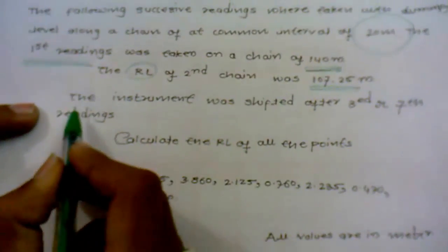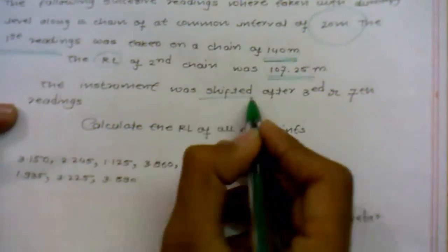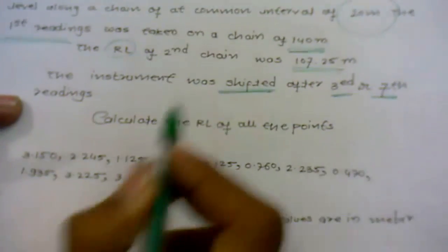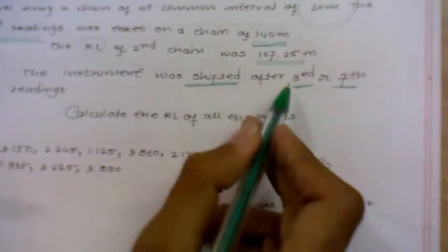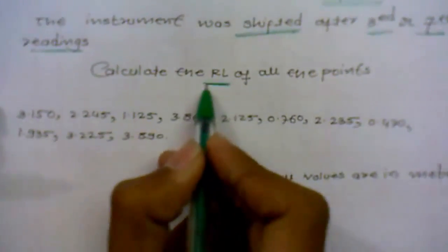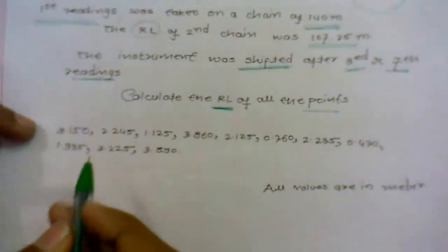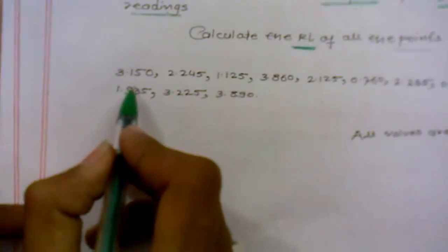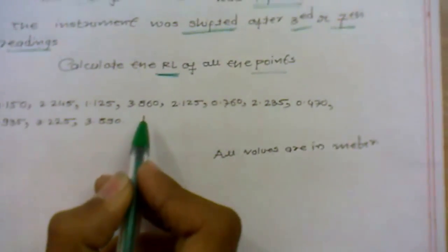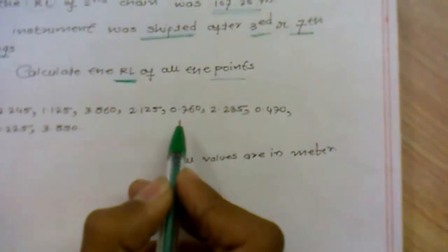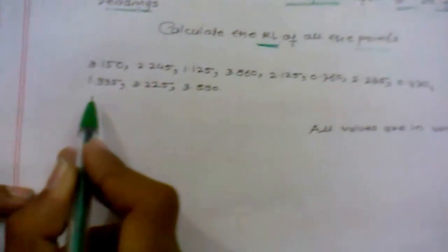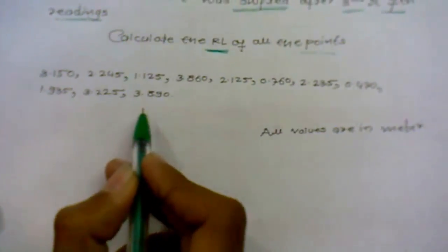The RL, that means the reduced length, of second chain was 107.25 meters. The numerical says that the instrument was shifted after 3rd and 7th position readings. Now we are to calculate the reduced length of all the points. The readings are given: 3.150, 2.245, 1.125, 3.860, 2.125, 0.760, 2.235, 0.470, 1.935, 3.225, 3.890.